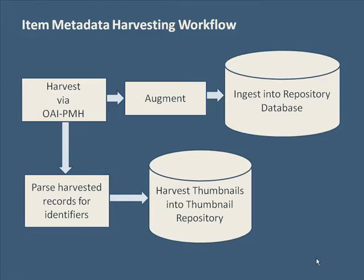If a collection's items are harvestable via the Open Archives Initiative Protocol for Metadata Harvesting, we add them to our automated harvesting workflow. Once harvested into our file system, we then take the records and filter and augment them.